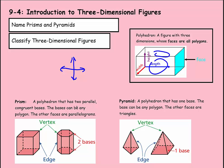A prism is a polyhedron that has two parallel congruent bases — that's really important. The bases can be any polygon and the other faces are parallelograms. For example, in this shape we have a base here and parallel to that on the bottom we also have another base. They are exactly the same size as each other, and the faces of this prism are all parallelograms — rectangles, you could say.